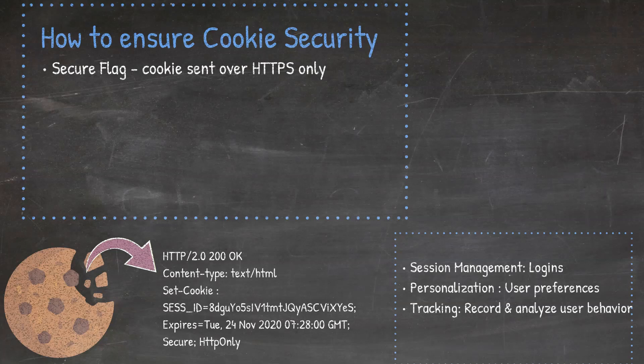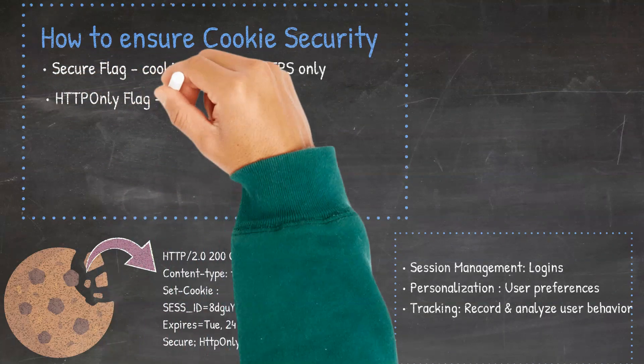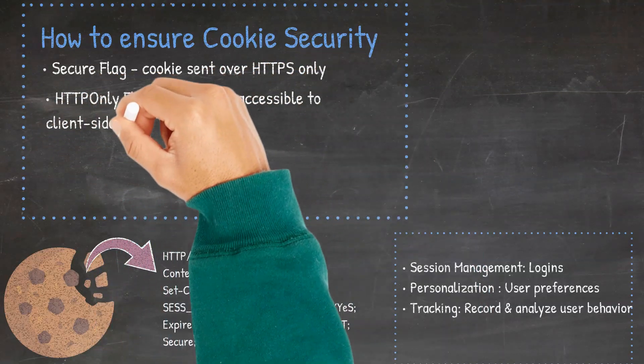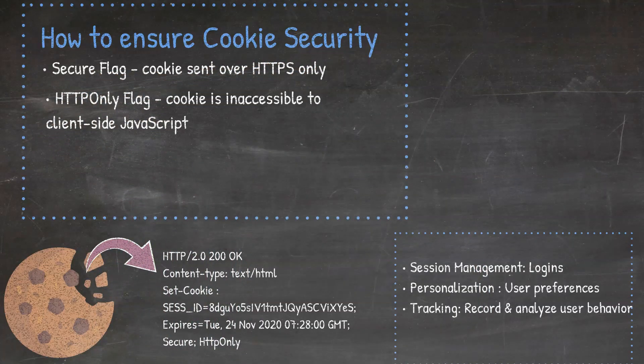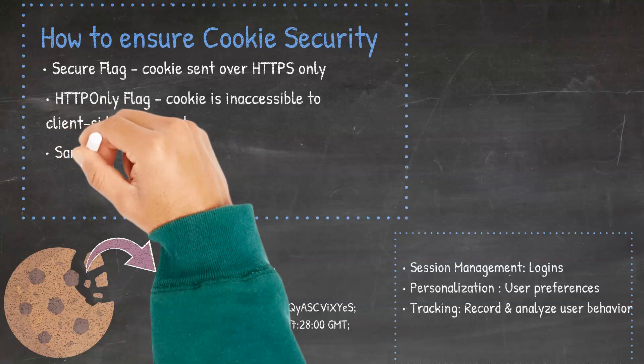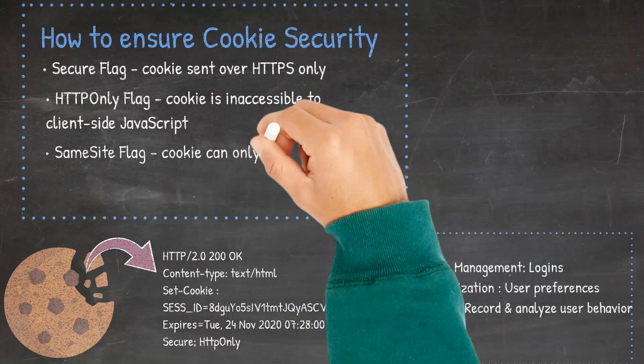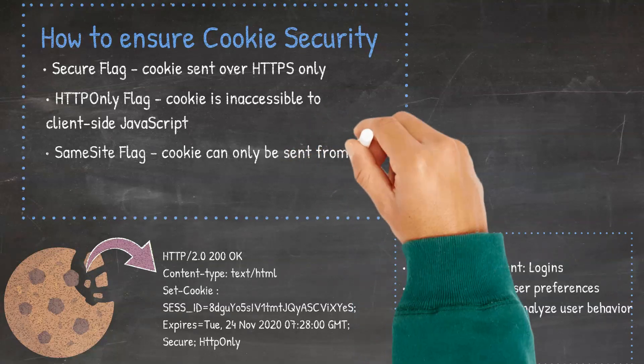A cookie with the HTTP-only attribute or flag is inaccessible to the client-side JavaScript. It's only sent to the server. This helps to mitigate against cross-site scripting attacks. The same-site flag ensures that a cookie can only be sent from the same domain, meaning a cookie can't be sent across different domains. This provides some protection against cross-site request-forged attacks, also known as CSRF attacks.